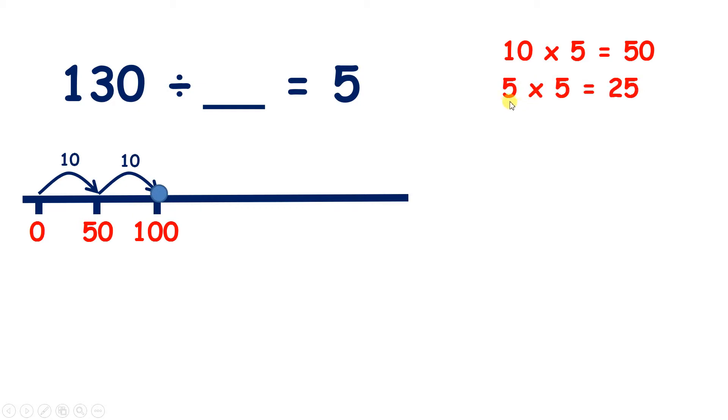But we know that 5 times 5 is 25, so if we count on five 5s, we get to 125, and then we need one more 5 to get to 130.